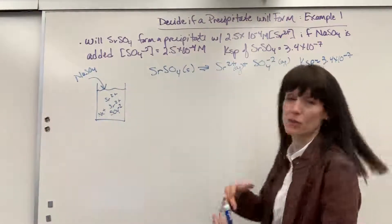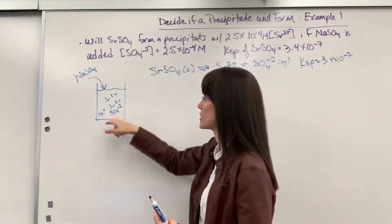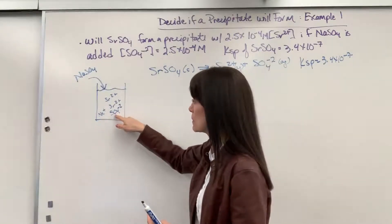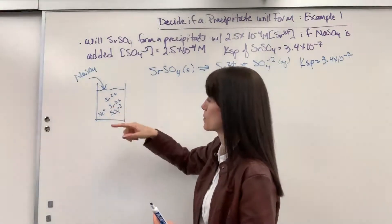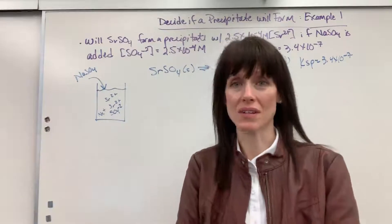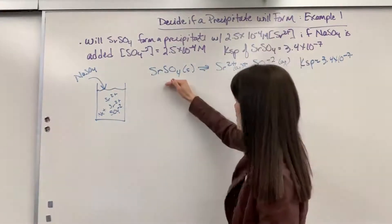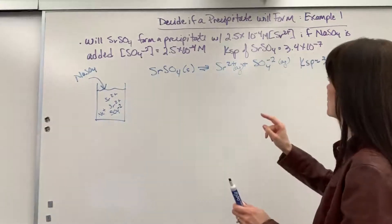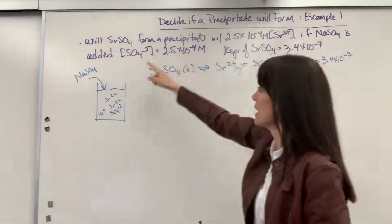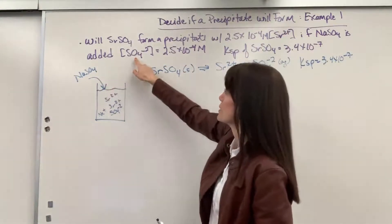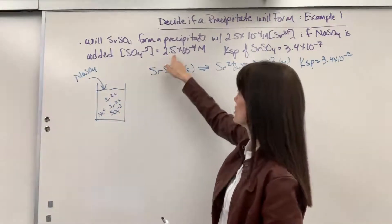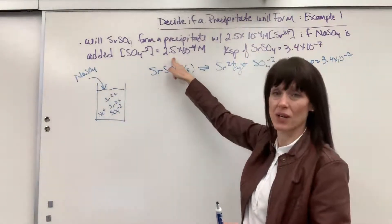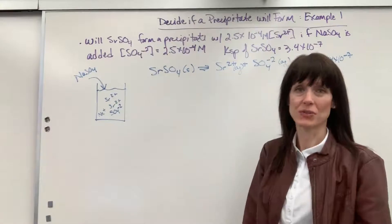But, once we reach equilibrium, perfect saturation, where I have the maximum number of sulfate, maximum number of strontium, if I add any more than that, it's going to reverse and it will be a solid. So, they're telling us that they're adding enough of this sodium sulfate so that the sulfate ion is 2.5 times 10 to the minus 4. And they're saying, hey, is it going to precipitate?